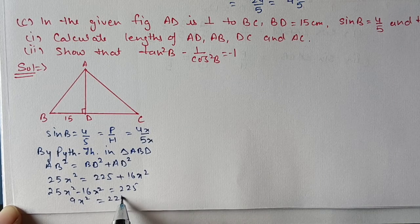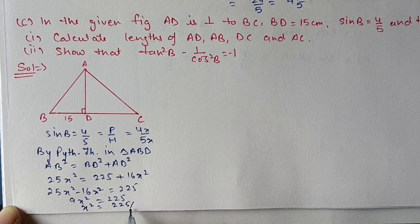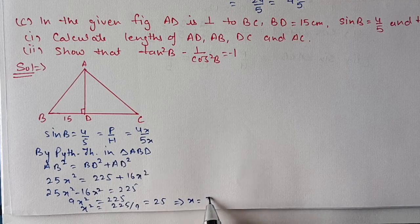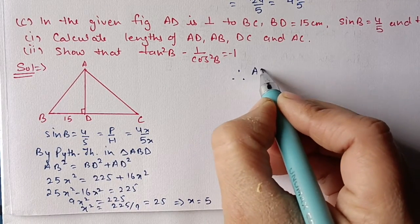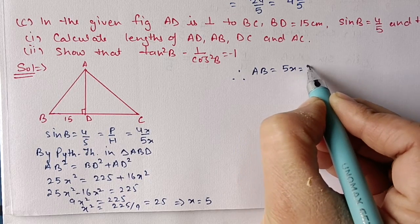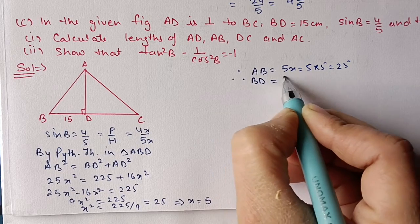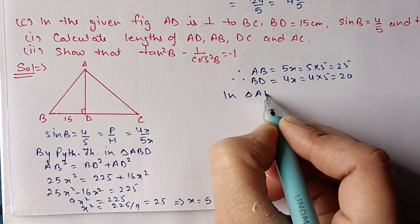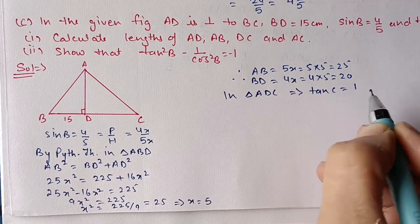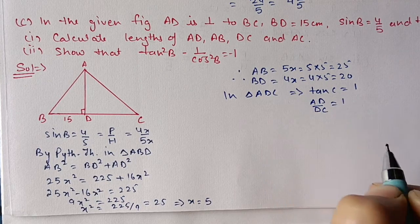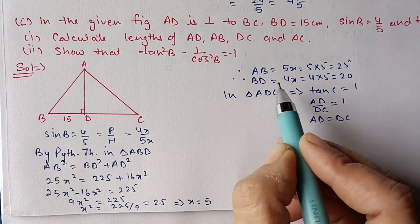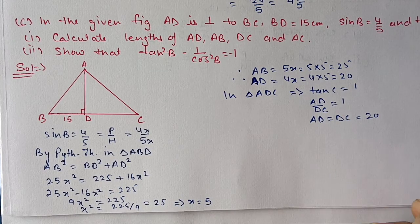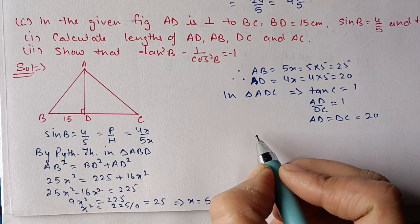So 25x² equals 225 plus 16x². Shifting gives 9x² equals 225, so x² equals 25 and x equals 5. Therefore AB equals 5x equals 25 and AD equals 4x equals 20. Now in triangle ADC, tan C equals 1, which means tan C equals AD upon DC equals 1, so DC equals AD equals 20. AD is 20, so DC is also 20.